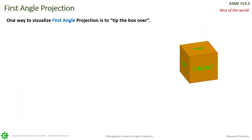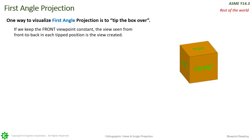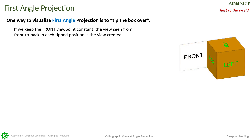First angle projection is a little bit different. Instead of unfolding our box, we do what's called tipping the box over. If we keep the front view constant, the view seen from the front to back in each tip position is the view created. So the front view is still directly in the center, the same way it was in third angle. But now, let's tip this front over to the right side. If we tip that over, you can see we now view the left view here. So the left view is on the right side of the front view. That is the image that is to the right of the part.